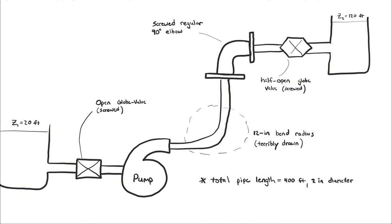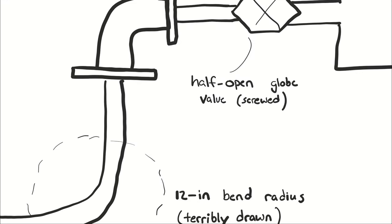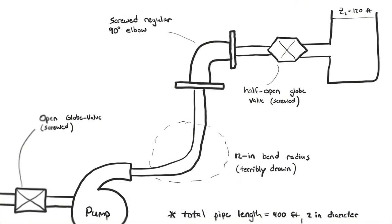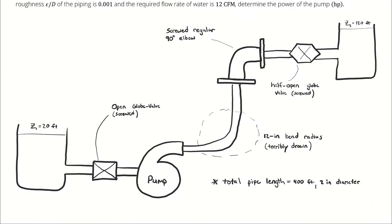There is also a 12 inch bend and then a half open globe valve, also screwed. In addition to those fittings, I'm going to have to account for the minor losses associated with the entrance and exit of the piping system into and out of the reservoirs.